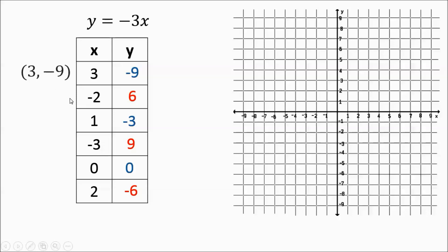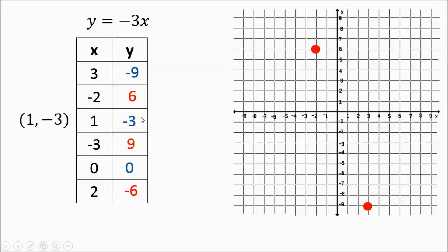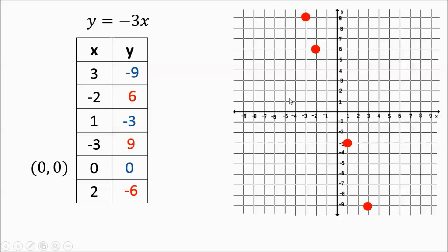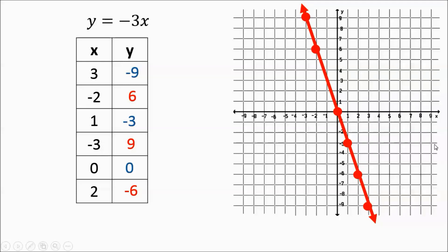Let's see if we can graph all these points — hopefully they're all going to line up along the same line. My first ordered pair was 3, negative 9 — that's going to be right 3, down 9, right about there. Negative 2, 6 — left 2, up 6 — that's going to put you right here in quadrant 2. We have 1, negative 3 — that's going to be right 1, down 3. Then negative 3, 9 — that's left 3 and up 9. Then 0, 0 — that's the origin, always right where the x-axis and y-axis meet. Then we have 2, negative 6 — right 2, down 6. Look at this — the points all line up. You know you're doing something right when that's the case.